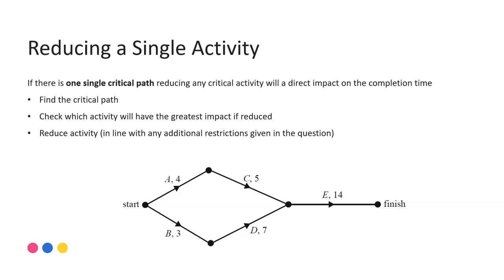When you are looking just to do a single activity reduction, any one activity on the critical path will have a direct impact when there is a single critical path. Then it's a case of checking which of those critical activities you should reduce in order to get the greatest impact — the greatest saving on that finishing time. There may be other restrictions or conditions within the question.